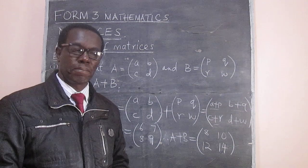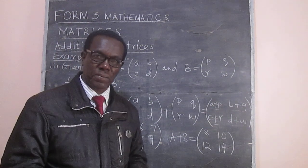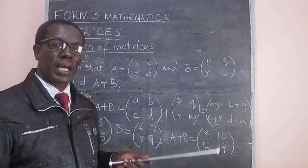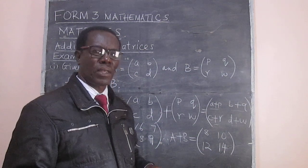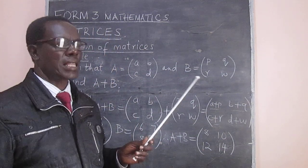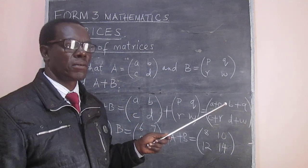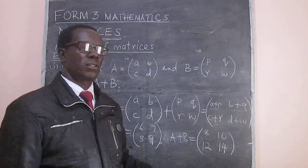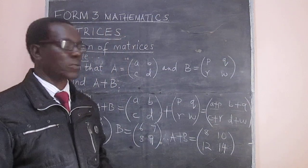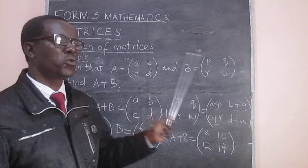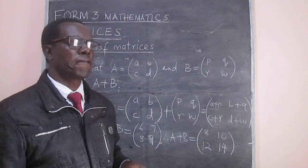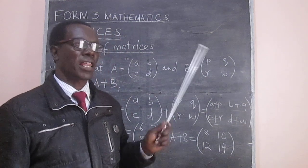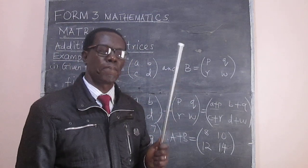In the next lesson, we are going to look at subtraction. Later, we will see how a matrix can be multiplied by a scalar. You need to remember that here we have handled a 2 by 2 matrix, but the matrix can be of any order — 3 by 3, or 2 by 3 must be added to a 2 by 3. The order must be the same for you to do the addition or subtraction. In the next video, we are going to look at subtraction of matrices together with multiplication of a matrix by a scalar.